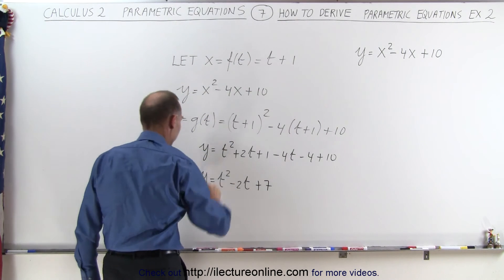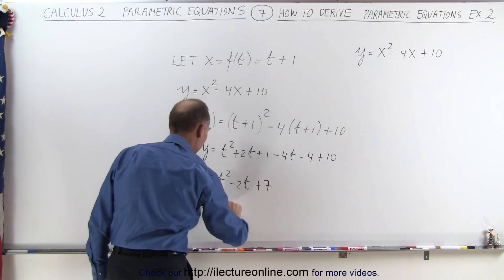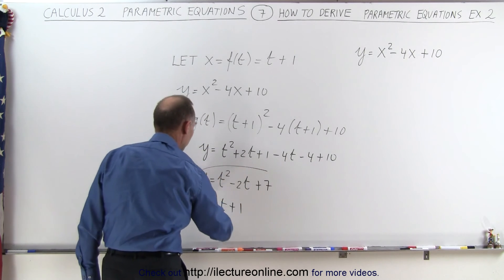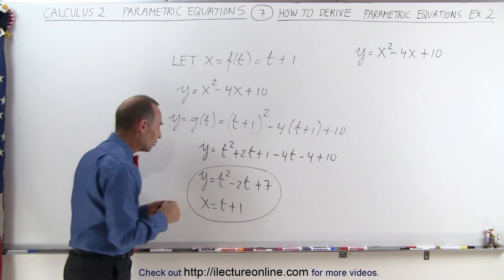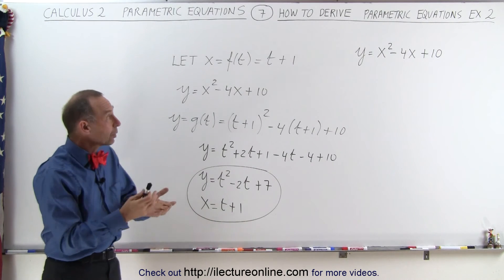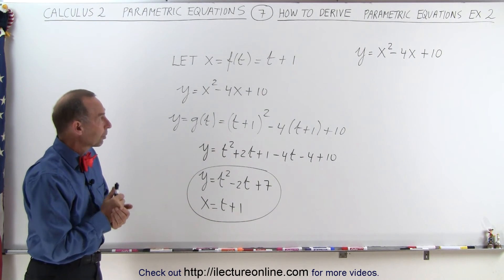So if we then bring this one down, we have x equals t plus 1. So these would be the two parametric equations representing the equation y equals x squared minus 4x plus 10.